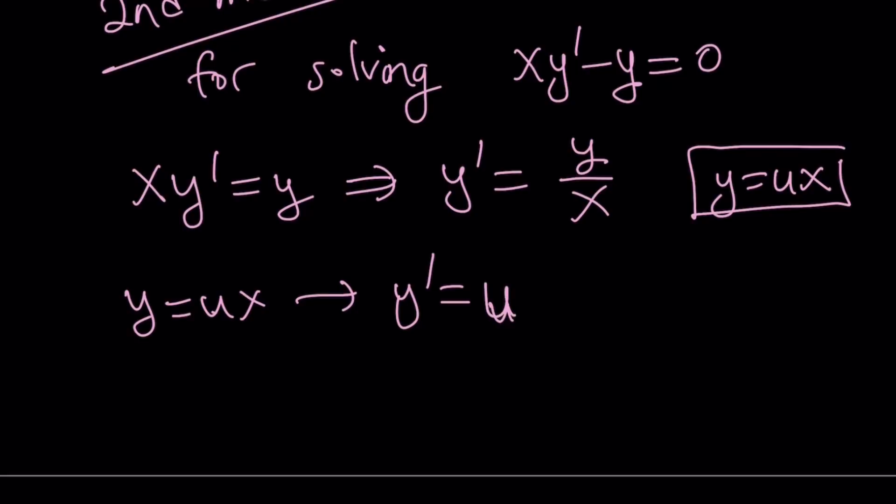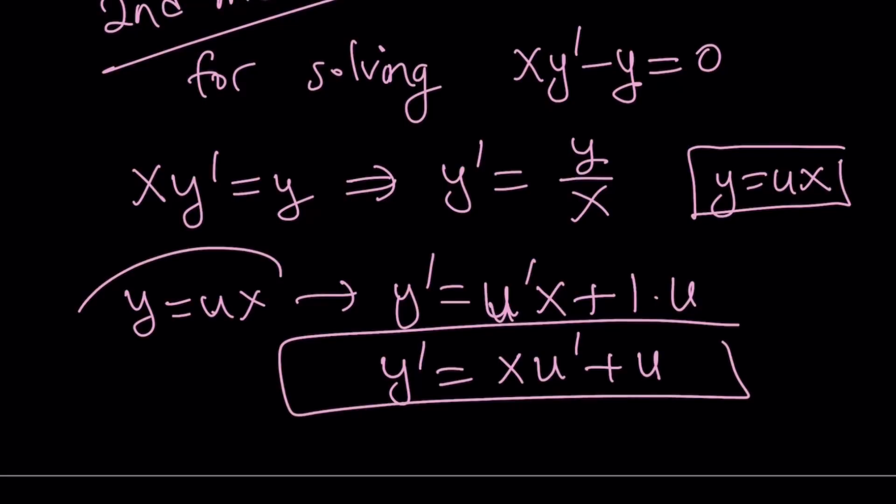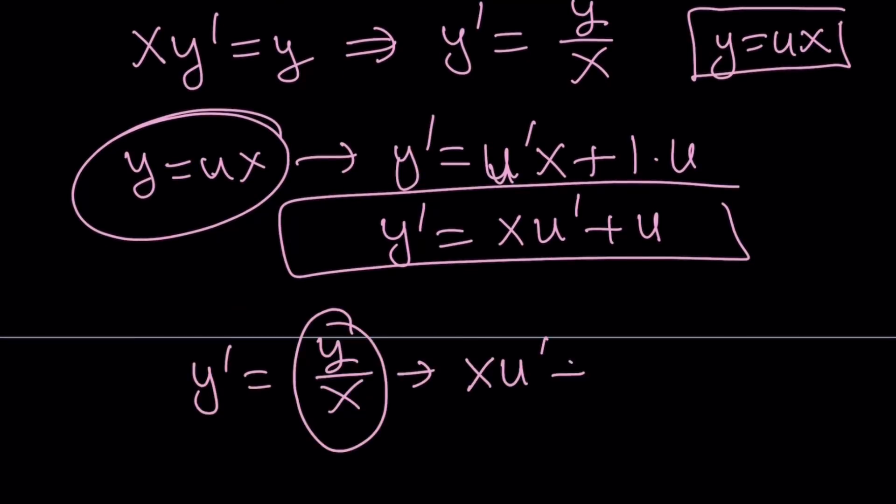So let's differentiate both sides. If y is equal to ux, then y prime is going to be derivative of u, derivative of u multiplied by x plus the derivative of x, which is 1 multiplied by u. So you can write the y prime as x u prime plus u. So that is y prime. And that is y. Let's go ahead and substitute this and see what happens.